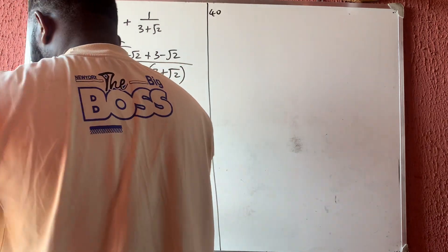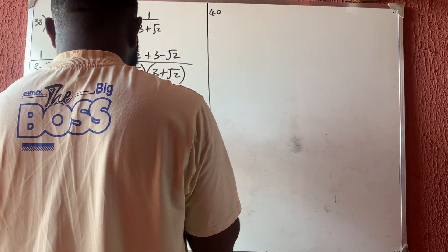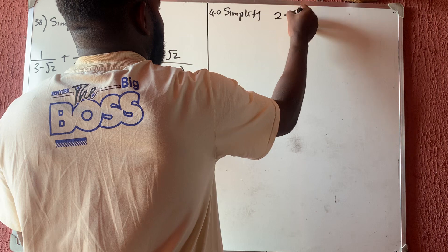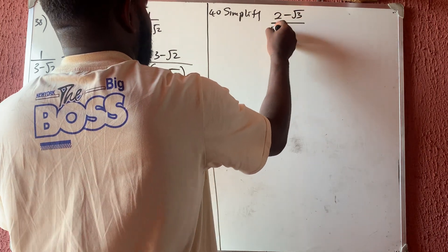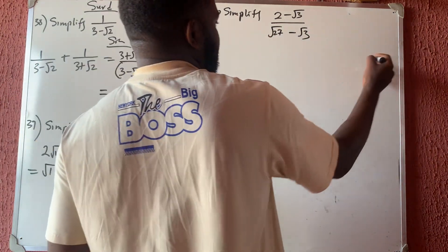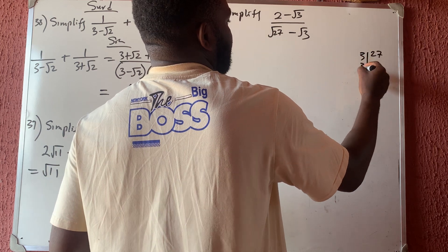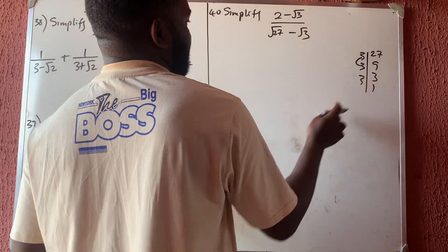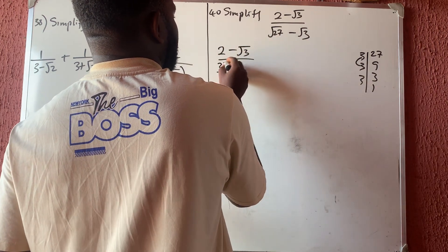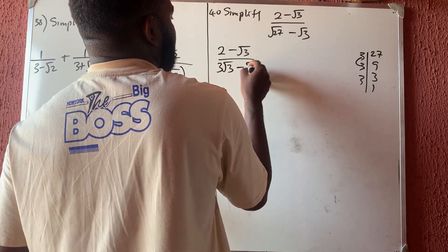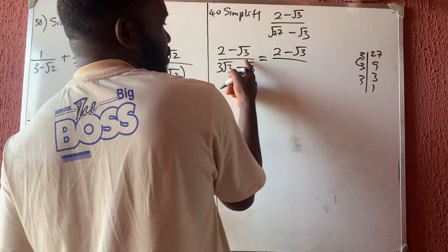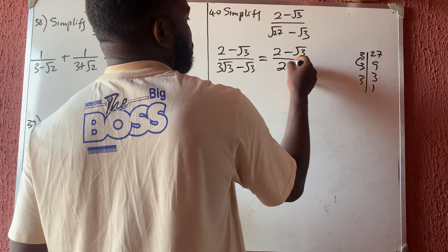Question 40 says: simplify (2 minus √3) all over (√27 minus √3). First, break down √27: 27 divides to 3, 9, 3, 3, 3, 1 — so √27 equals 3√3. We now have (2 minus √3) all over (3√3 minus √3). Factoring the denominator: 3 minus 1 gives 2, so the denominator becomes 2√3.